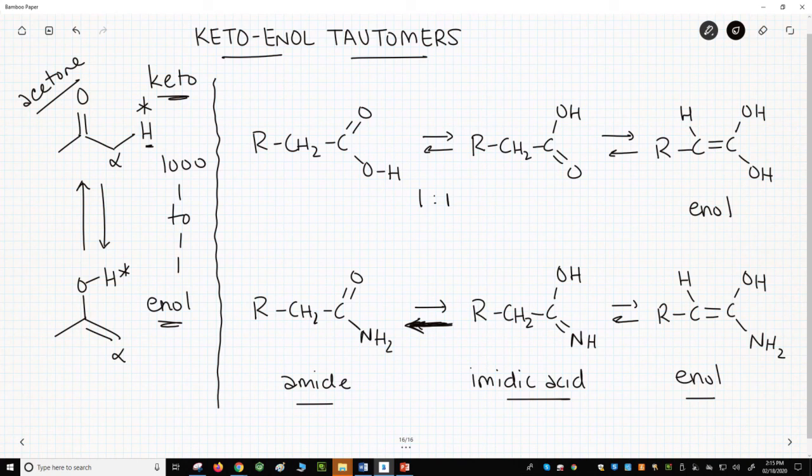Anytime that atoms move, the structures are not resonance forms. So that is the story on tautomers. Organic chemistry has many different tautomers, but by far the most common context for tautomers is the keto-enol tautomerization. The equilibrium strongly favors the keto form.